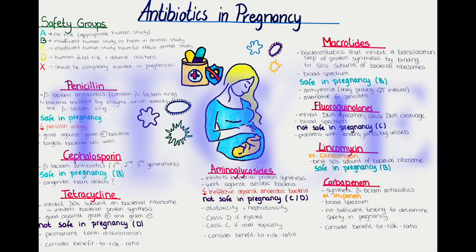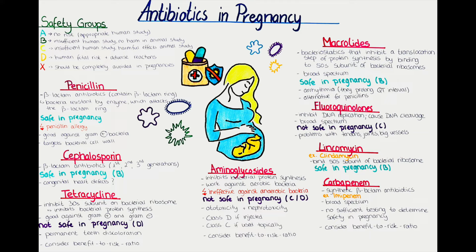The next class is the tetracyclines. Tetracyclines are a class of antibiotics that work on the bacterial ribosome — they bind to the 30S subunit of the bacterial ribosome, which inhibits bacterial protein synthesis. They are considered broad-spectrum antibiotics, working well on both gram-positive and gram-negative bacterial species. However, most importantly, the tetracyclines should be avoided during pregnancy and also for young children.